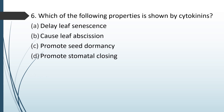Which of the following properties is shown by cytokinin? Option A: delay leaf senescence. Option B: cause leaf abscission. Option C: promote seed dormancy. Option D: promote stomatal closing. The correct answer is option A, delay leaf senescence.